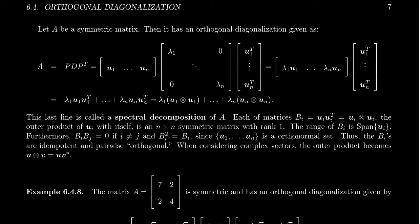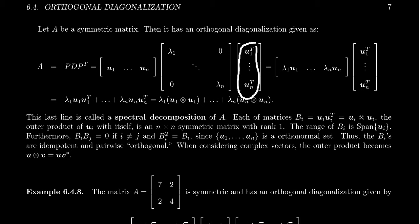Since the matrix is symmetric, it has an orthogonal diagonalization A = P D P^T, for which the columns of P are the eigenvectors of A. The diagonal entries of D are exactly the eigenvalues of A. And then the rows of P^T are going to be the left eigenvectors of A, which are none other than just the transposes of the columns of P. So really, for a symmetric matrix, the left eigenvectors are just the same as the traditional right eigenvectors.